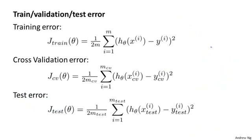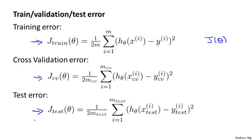Now that we've defined the training, cross validation, and test sets, we can also define their respective errors. J_train of theta is the training error — essentially the same J of theta used throughout. J_CV is the cross validation error, measured on the cross validation data set. And J_test is the test set error, same as before.